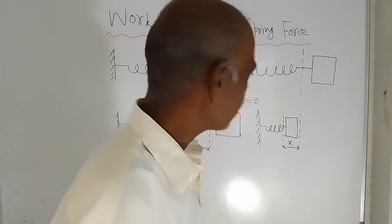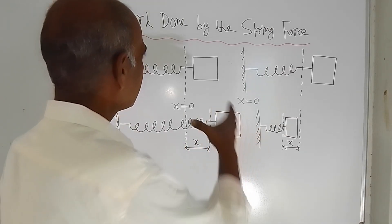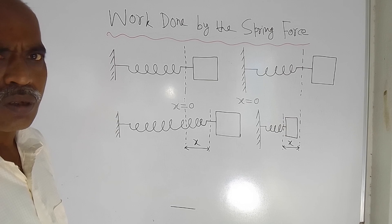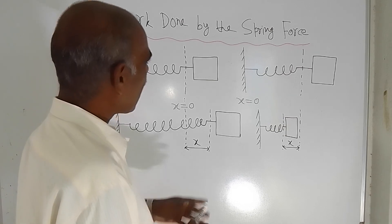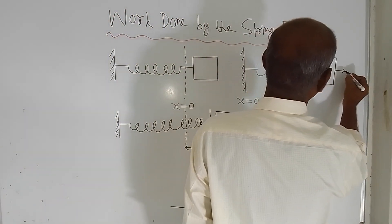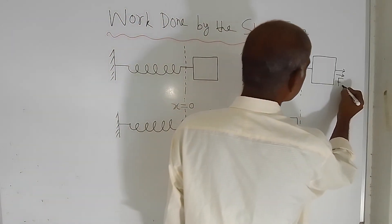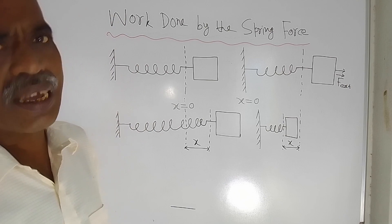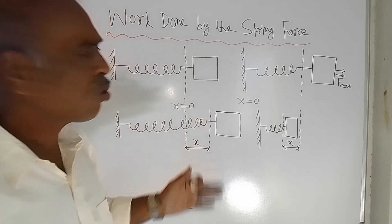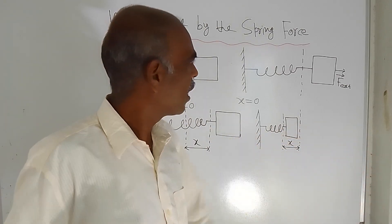If I, using my hand, pull this block in this direction, I am applying F force — denoted as F_EXT, meaning external force. If I apply this external force on the block, the spring will be stretched. And this is the stretched condition.